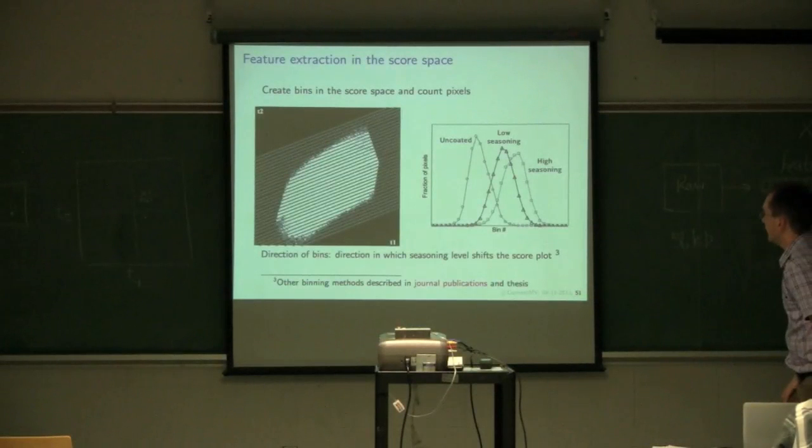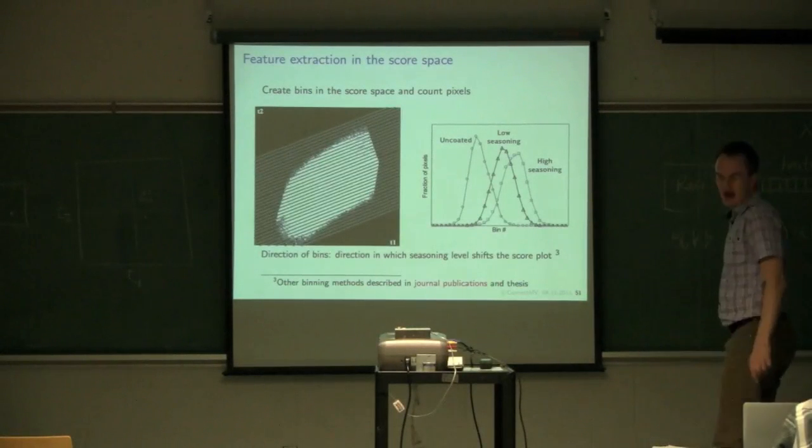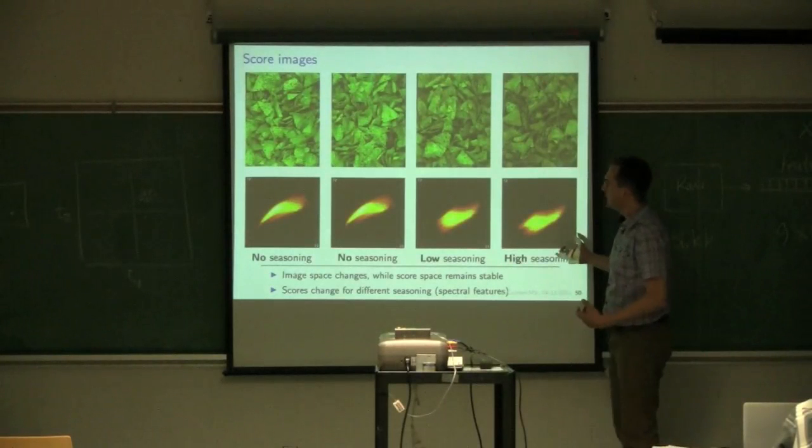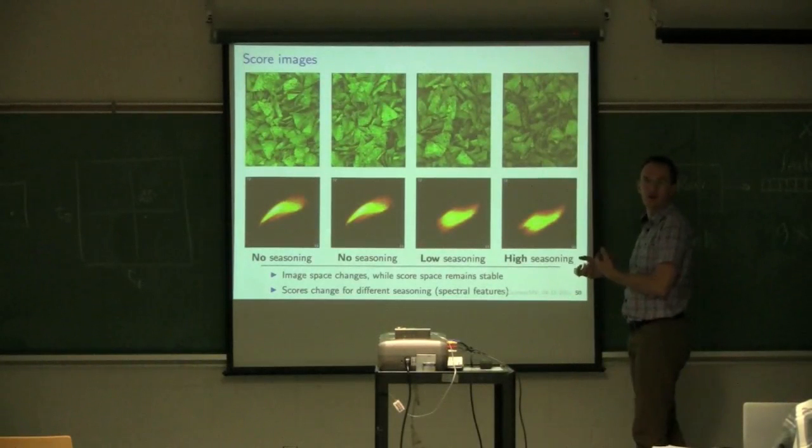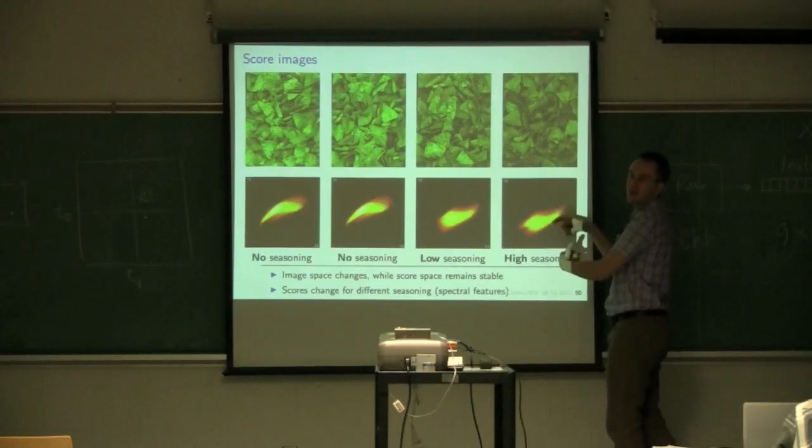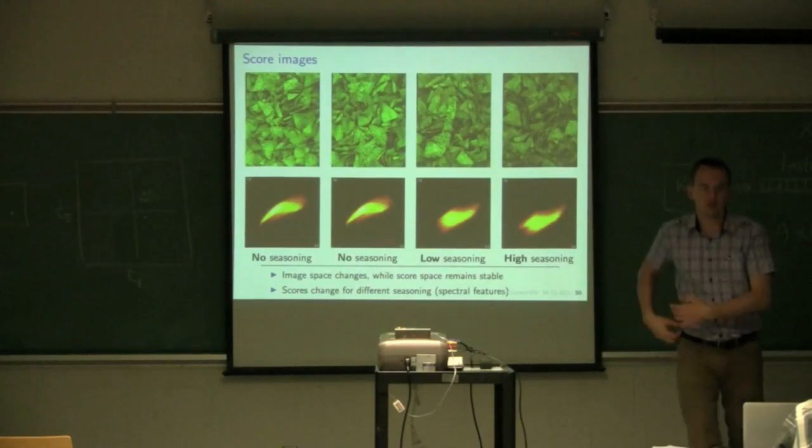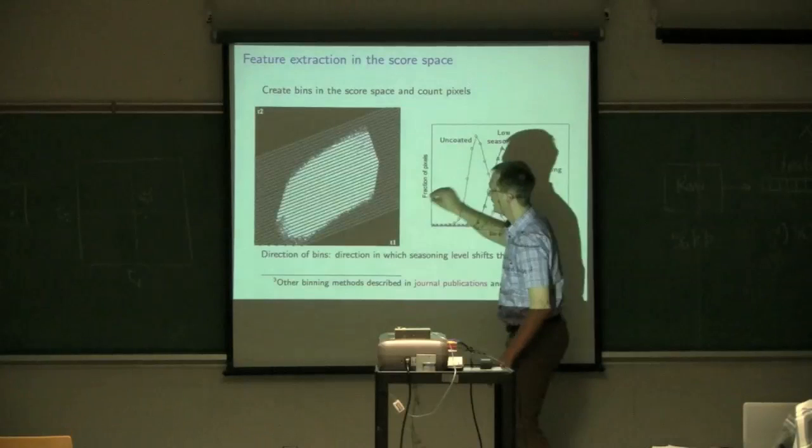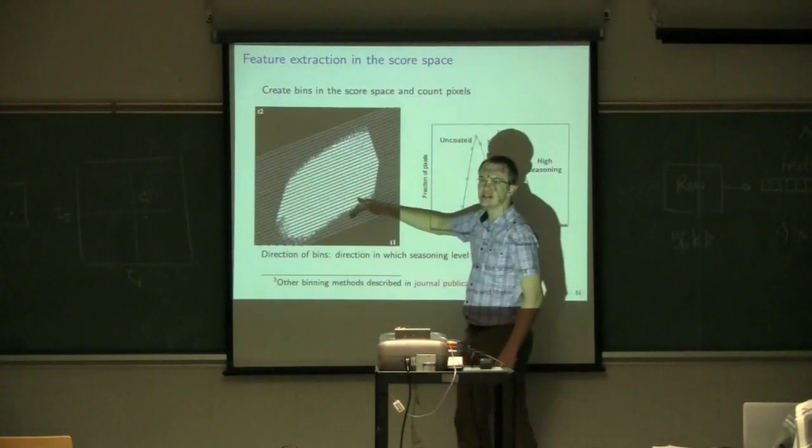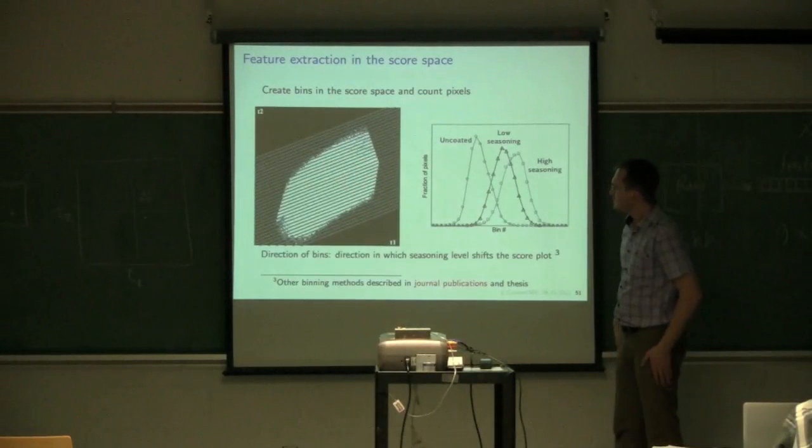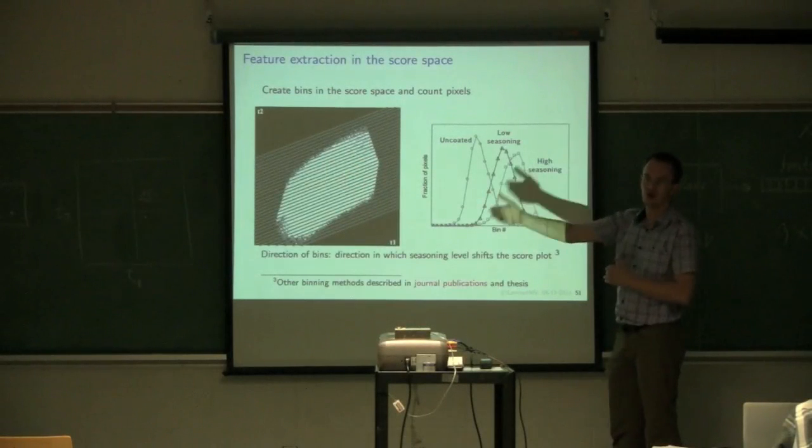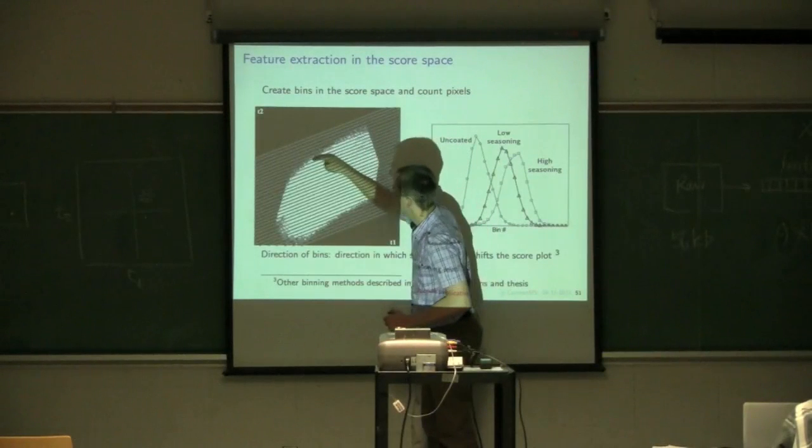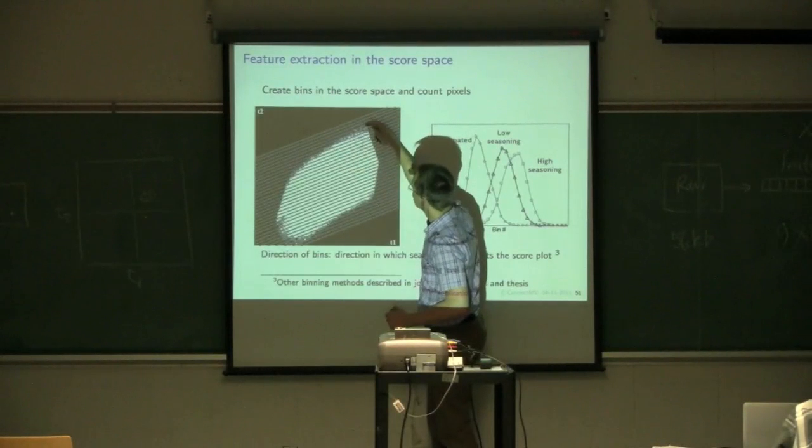So Honglu noticed that direction, as you add seasoning to the food, this is shifting in this diagonal direction. So one way is to try and quantify where those pixels lie in the score space and count out how many pixels there are in certain regions. So what she did was, she divided the score space up in this sort of diagonal fashion, through these parallel lines, and there's 32 bins created in the score space.